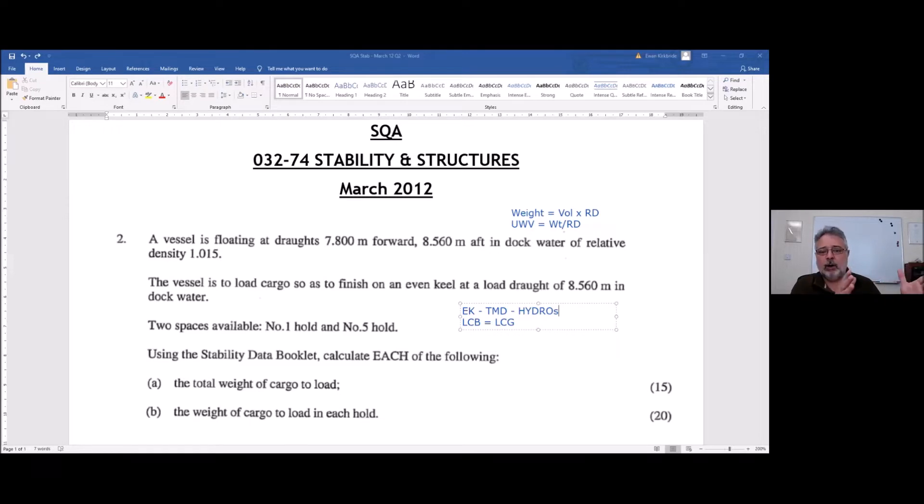Normally, stage one is you get your initial condition finalized - your initial displacement and your initial LCG. Then you go into the LCG table to load, discharge, and shift your cargo to find your final condition. In this question, they've given us the initial drafts from which we can get initial displacement and LCG. And by giving us even keel with the draft in the final condition, they've effectively given us access to final displacement and final LCG.